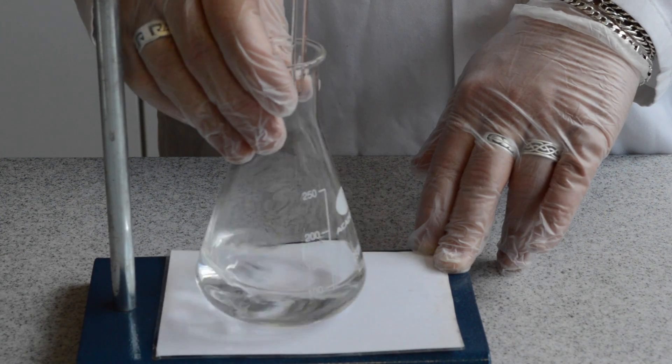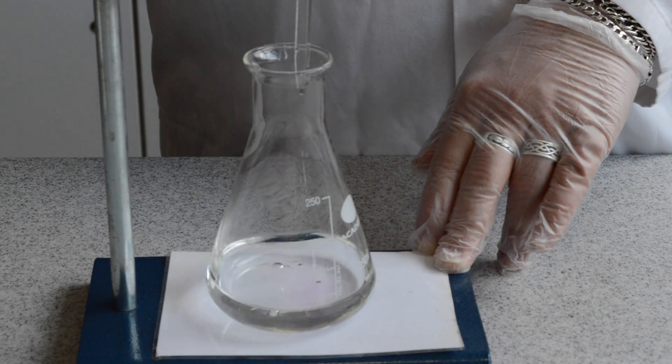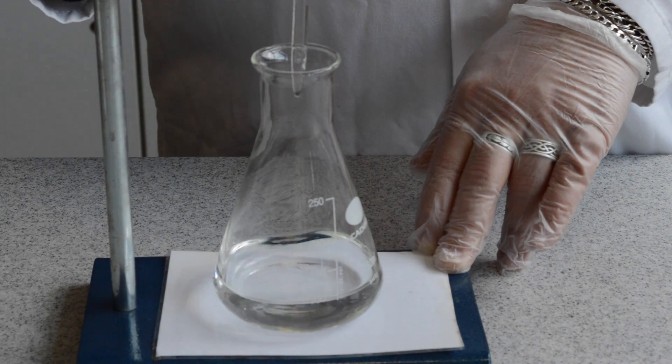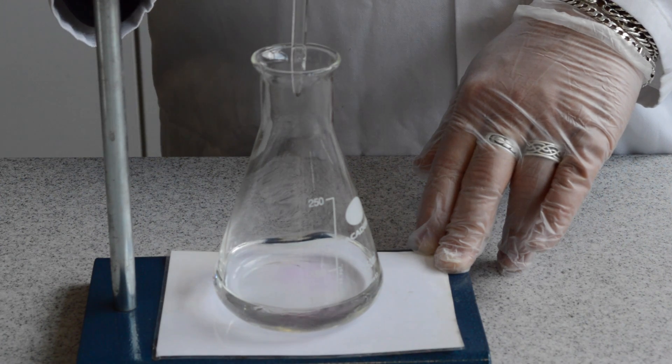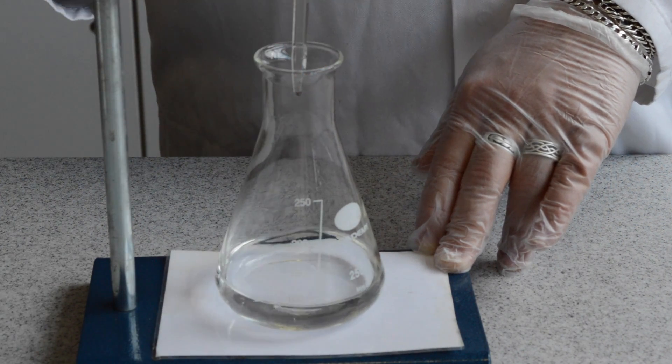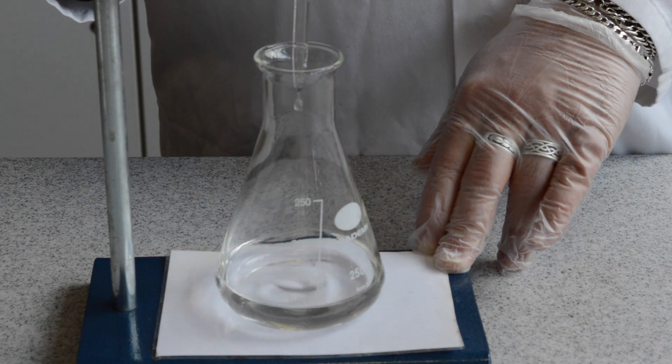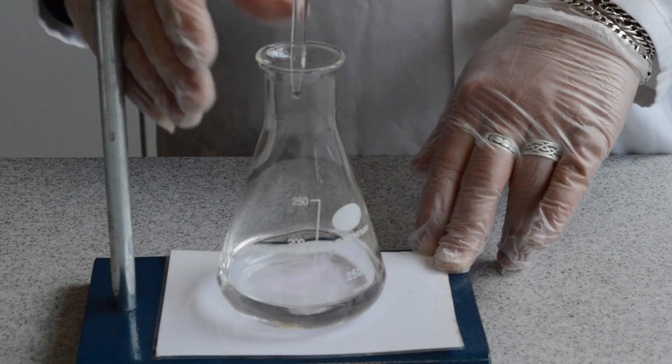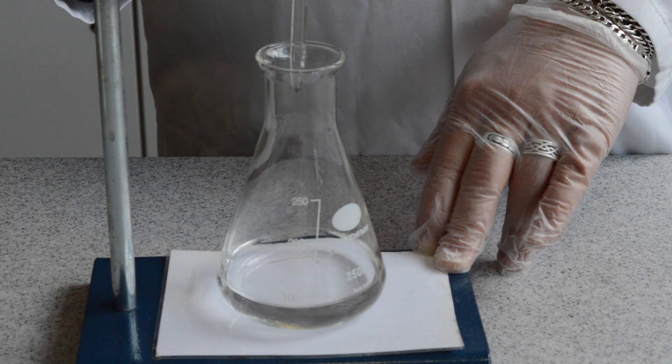Nearing the end point of the titration, you may notice that the indicator starts to show some colour change. This will disappear as you swirl the flask. This indicates that the end point of the titration is being reached. Add increasingly smaller amounts of the sodium hydroxide. This can be added dropwise as the end point approaches.